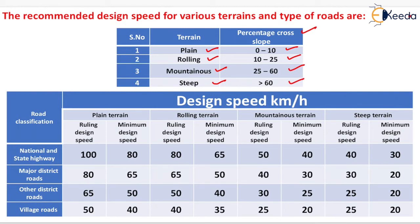Design speed is specified for national highways and state highways, major district roads (MDR), other district roads (ODR), and village roads, across the four terrain categories. For national highways and state highways in plane terrain, the ruling design speed is 100 km/h and the minimum design speed is 80 km/h. Similarly, design speeds can be determined for rolling, mountainous, and steep terrain, as well as for major district roads, other district roads, and village roads.